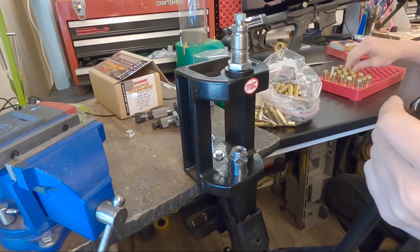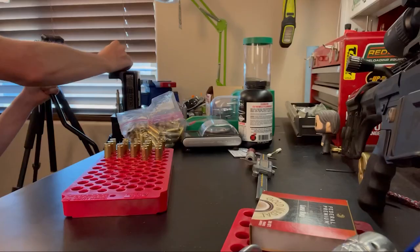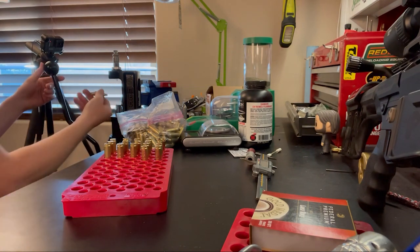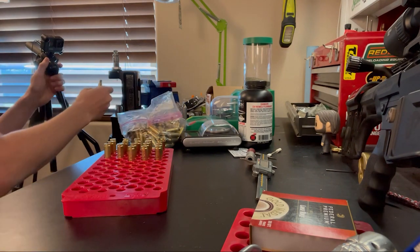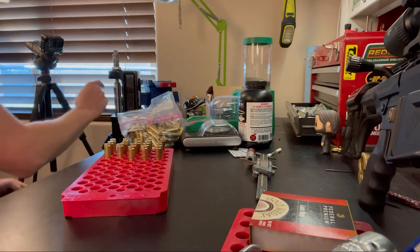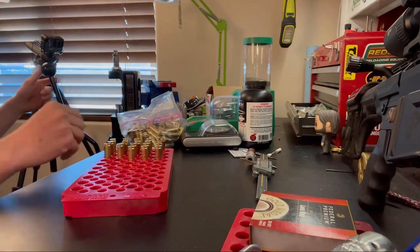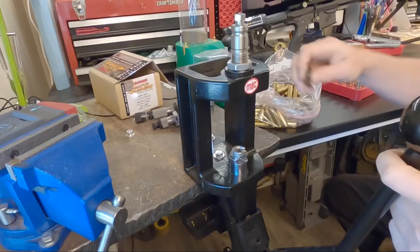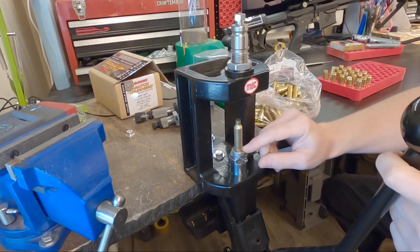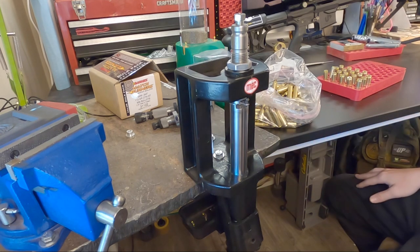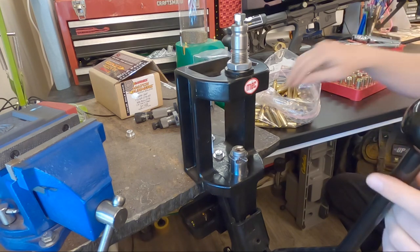The die that I'm using on top is a Lee decapping pin die. Just a universal decapper. Super helpful to have around because you can decap anything with that one die which is super nice. Really helps if you're trying to get base to your shoulder headspace measurements. Just to decap them real quick. That's the way I suggest doing it.